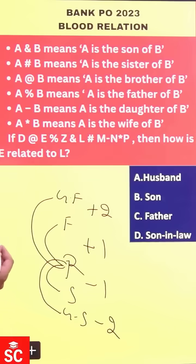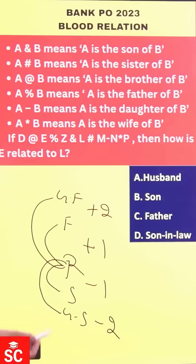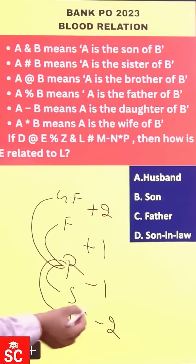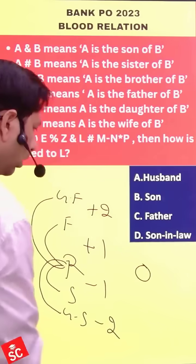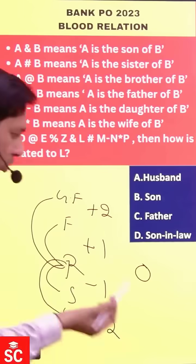Similarly, relations like brother, sister, wife and husband are on the same generation level, so the generation gap remains zero. Now, come to the question.